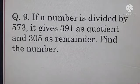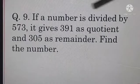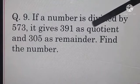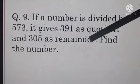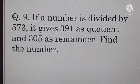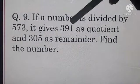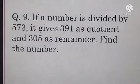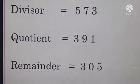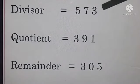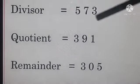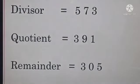Now our question number 9. If a number is divided by 573, it gives 391 as quotient and 305 as remainder. Find the number. So these are the information which are given to us and now I have told you that given parts we will start doing our solution.